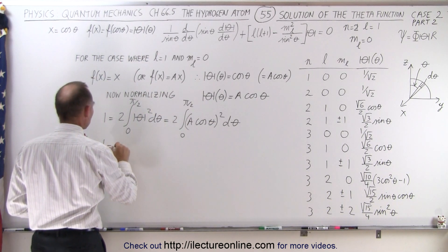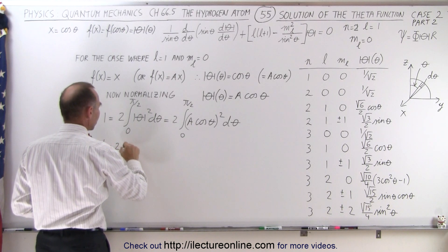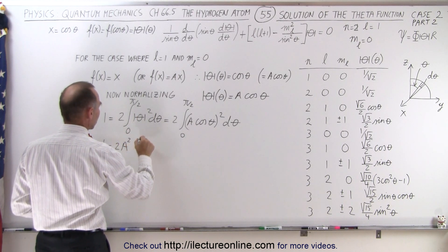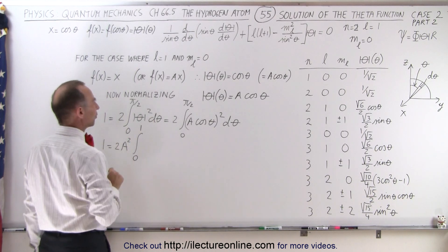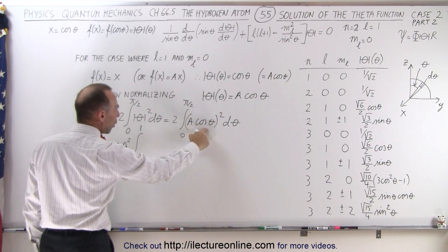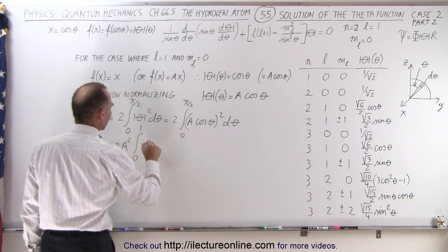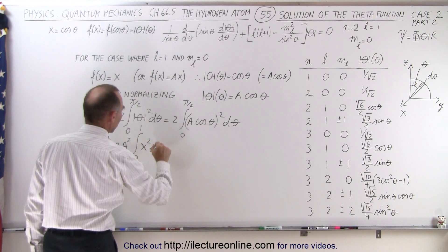So we're now going to make the change. We're now going to say that one is equal to two times, and I'm going to pull the a squared out, a squared times the integral. Now, the new limits of integration in terms of x is going to be from zero to one, and instead of having the cosine of theta, we're going to have x squared, instead of d theta, we're going to have dx.